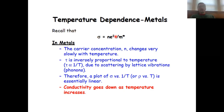In metals, the carrier concentration changes very slowly with temperature. That's essentially because any crystal orbital above the Fermi level is a crystal orbital that can be used to carry the charge, and to excite an electron into this crystal orbital requires only minimal energy. So overall, the charge carrier concentration changes only slowly with temperature in a metal.